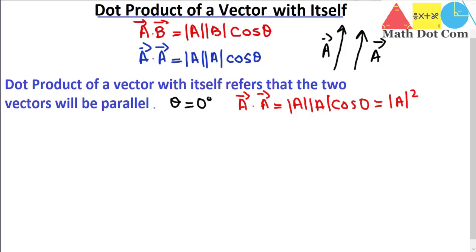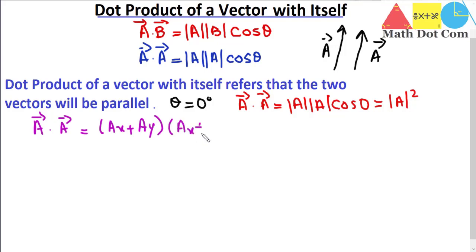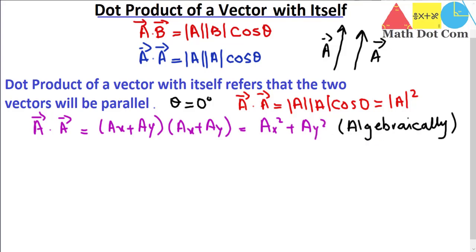Now let's see it algebraically. As we have seen in our previous lecture, you can find the dot product in two ways: the geometrical way when you have the angle, and the algebraic way when you don't. Algebraically, A dot A equals the x-component of A times the x-component of A plus the y-component of A times the y-component of A, which gives the square of the x-component plus the square of the y-component.